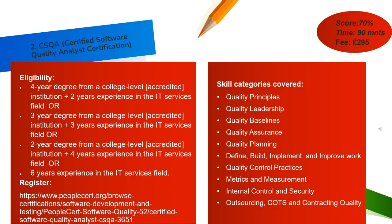For the CSQA certification, there are 4 eligibility options. First, a 4-year degree plus 2 years of IT experience. If you have a 3-year college degree, then 3 years of IT experience. If you have a 2-year degree course, then 4 years of IT experience. If you have no degree, then 6 years of IT experience. If you meet one of these 4 bullet points, you are eligible for the exam.